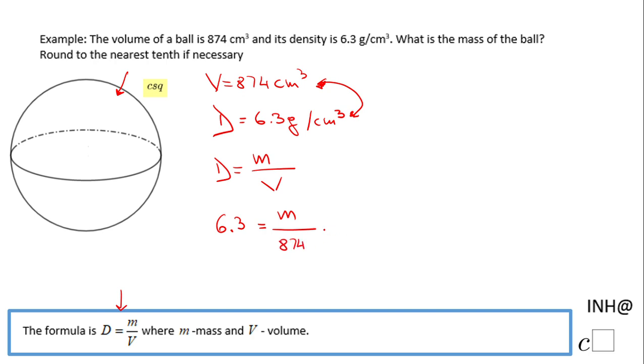So the only thing we have to do here is to multiply by 874 on both sides to cancel this guy here. And the mass of this ball will be 874 times 6.3, which will be in grams.